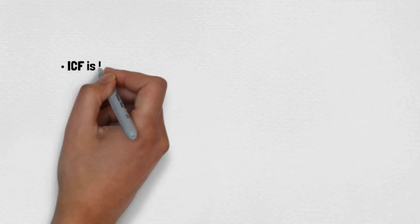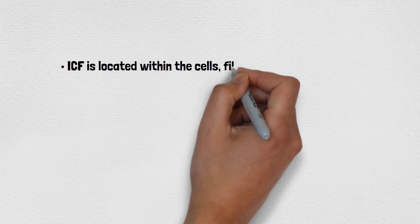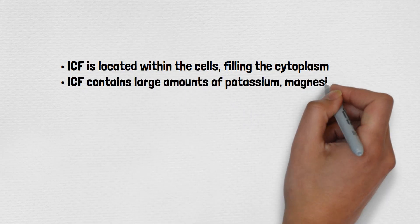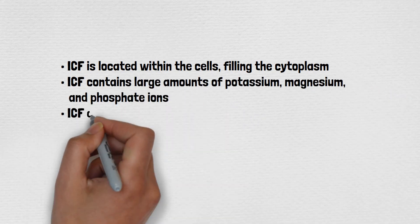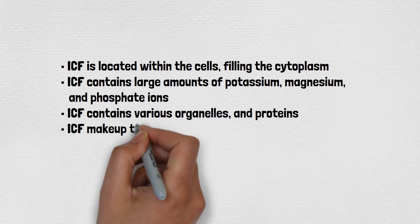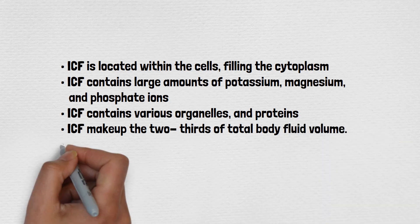ICF is located within the cells, filling the cytoplasm. ICF contains large amounts of potassium, magnesium and phosphate ions. ICF contains various organelles and proteins. ICF makes up the two-thirds of total body fluid volume.